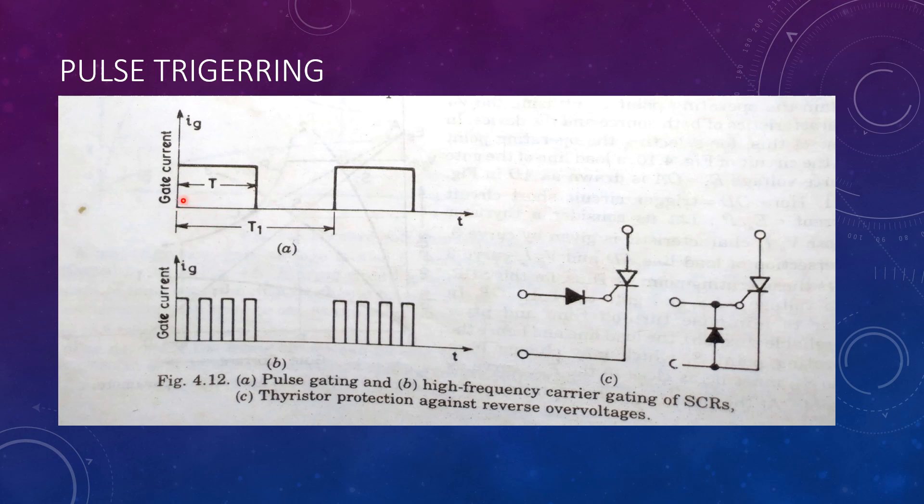The pulse width T must be selected such that the anode to cathode current must be greater than latching current. Usually, the value of T is selected greater than the turn on time T on of a thyristor.